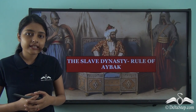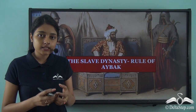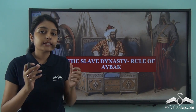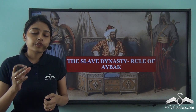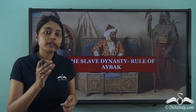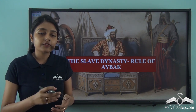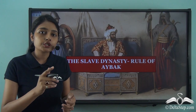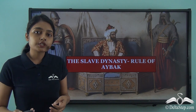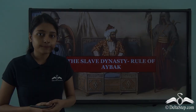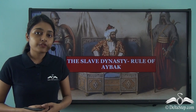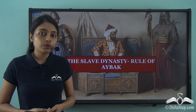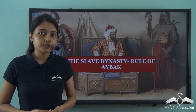The last couple of lessons initiated us to the five dynasties that constituted the Delhi Sultanate. We also traced the various sources that give us information on the Delhi Sultanate. Now we should begin discussing each of these dynasties in detail. In this lesson, we will be discussing the slave dynasty and the rule of Sultan Qutubuddin Aibak.